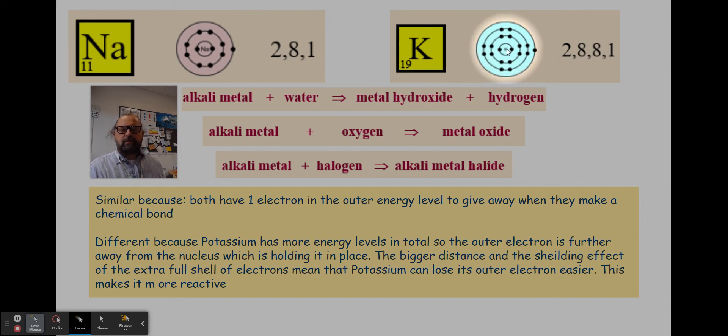You could add to your explanation the fact that an extra layer of electrons in the potassium atom also shields the outermost energy level from the pull of the nucleus, and further adds to the ease with which potassium can lose its outer electron and react.